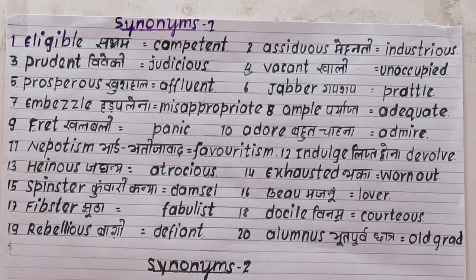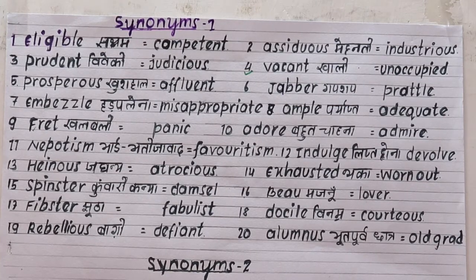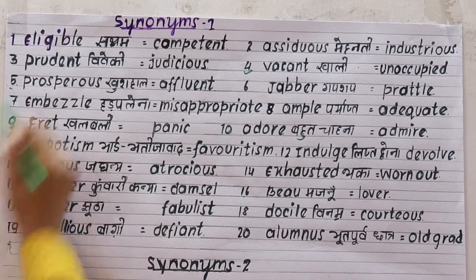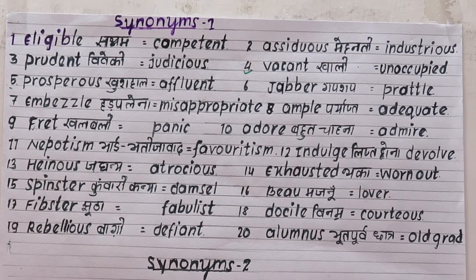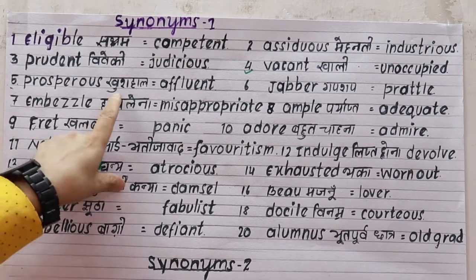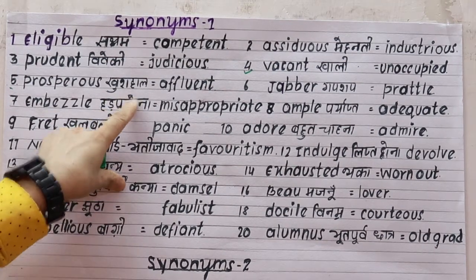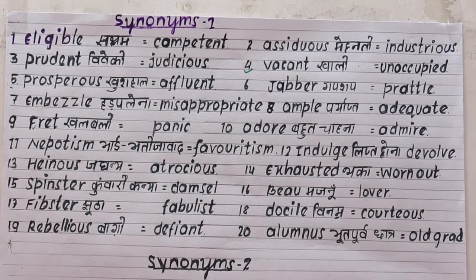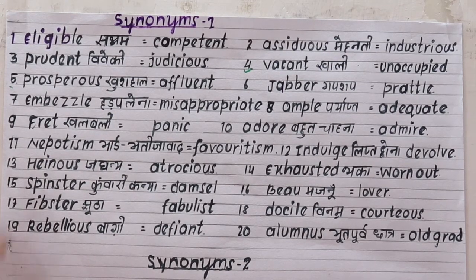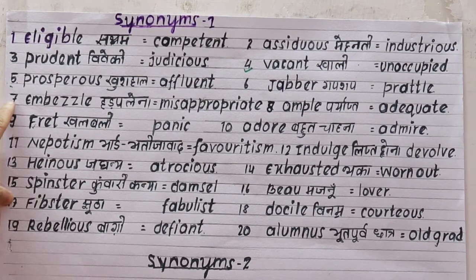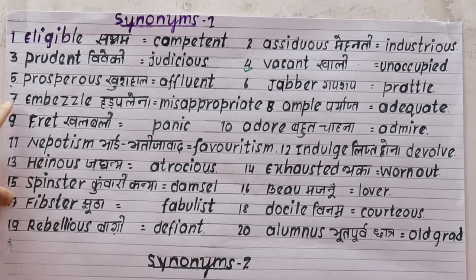Number five is 'prosperous', meaning wealthy or well-off. The synonym is 'affluent'. For example: they are living a prosperous life, or they are living an affluent life.